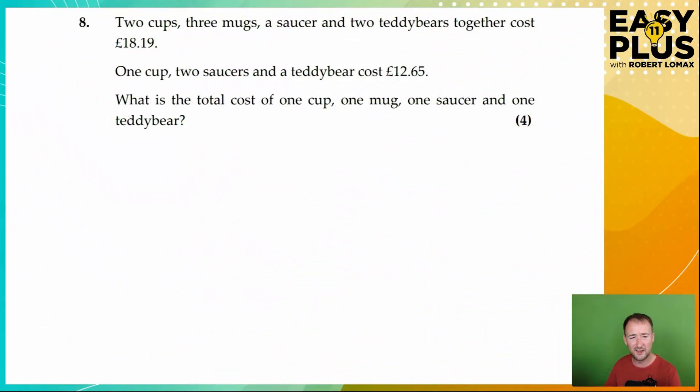Now, this is an absolute classic of a question and it's a style that quite often turns up, especially in some independent school 11 plus papers, but it could come up anywhere. And this looks horrible. We've got two cups, three mugs, a saucer and two teddy bears costing £18.19, which is complex enough. And then we've got one cup, two saucers and a teddy bear costing £12.65. And somehow out of all this, you have to find the cost of one cup, one mug, one saucer and one teddy bear.